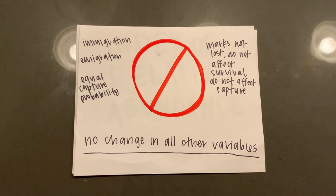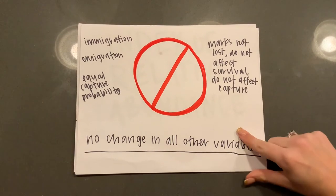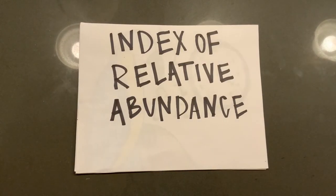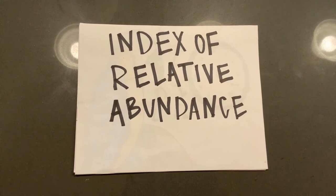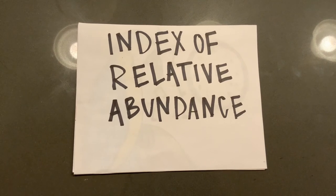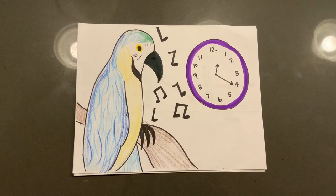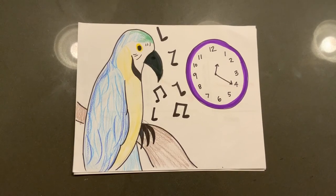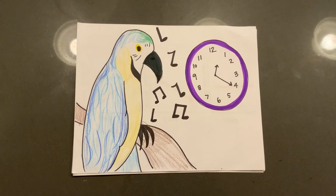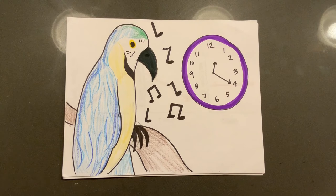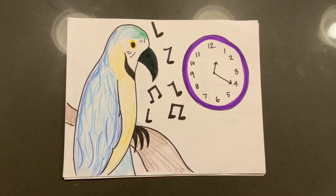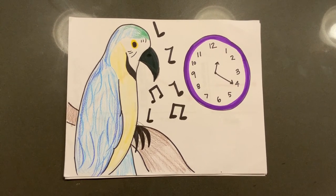Mark-recapture is often difficult, time intensive, and takes a lot of effort, so the best alternative is often an index of relative abundance — our third method. An index of relative abundance is a count or capture rate per standard unit of effort, which can be defined by the experimenters. A popular example of this is the number of birds vocalizing per unit of time, or the vocalization frequency.